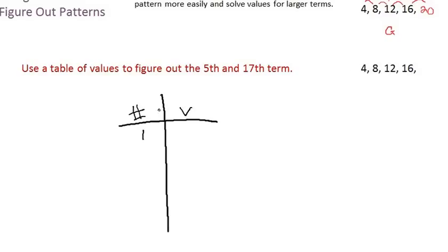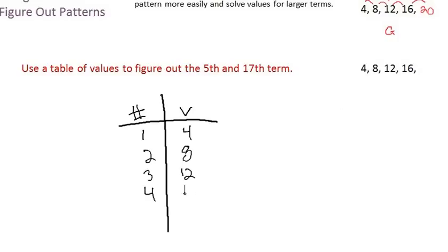So our first term number has the value 4, the second one is 8, the third one is 12, and the fourth one is 16.